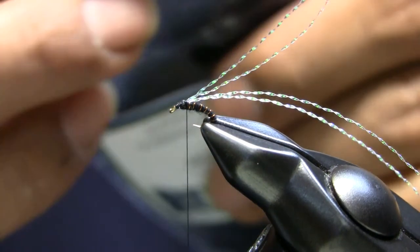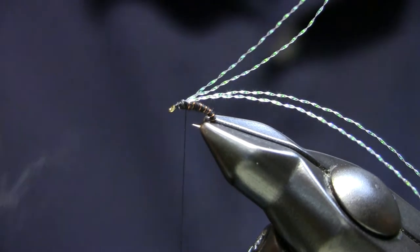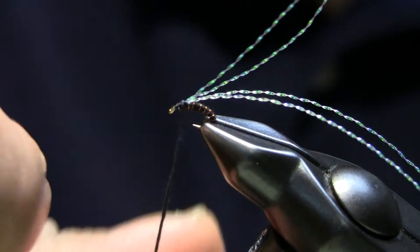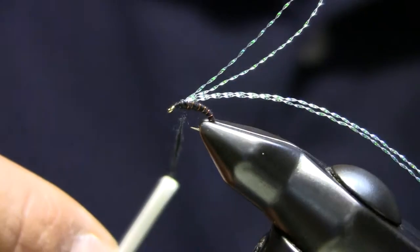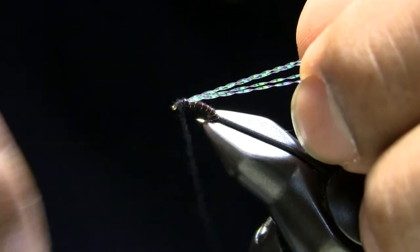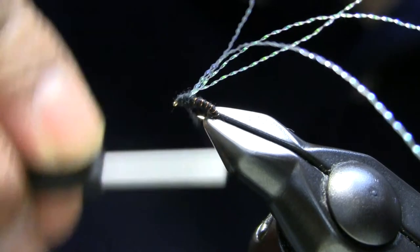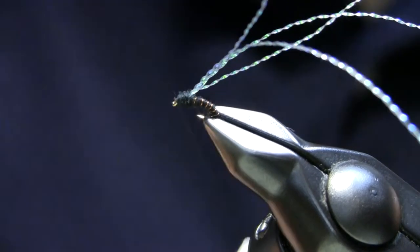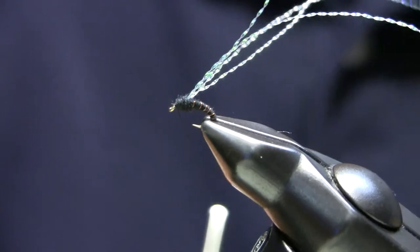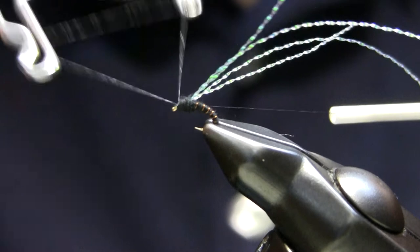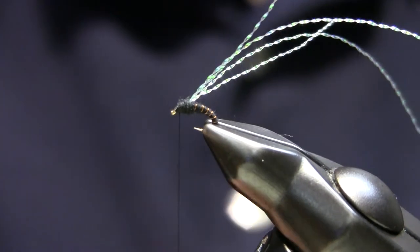And then again, just grab a little bit of your black dubbing and cover over your butts and your thread. And if you want, you can even throw one behind it just kind of prop up that flash a little bit. And then once you get there, just kind of finish it off and then just whip finish it.